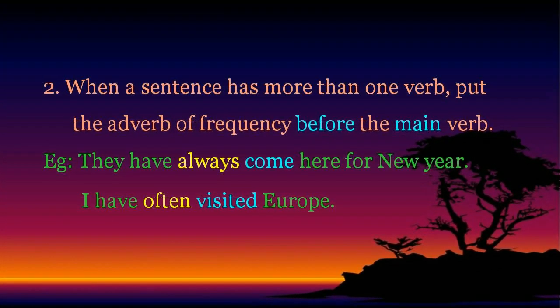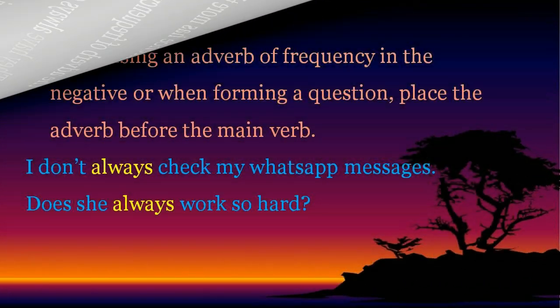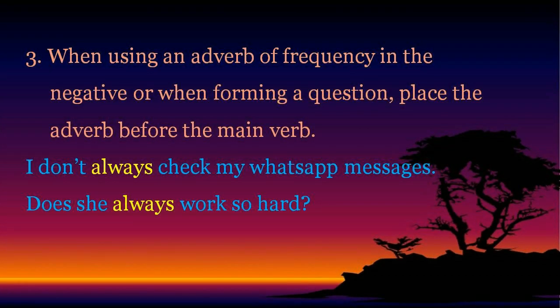Rule number two: when a sentence has more than one verb, put the adverb of frequency before the main verb. Examples: 'They have always come here for New Year.' 'I have often visited Europe.' Rule number three: when using an adverb of frequency in the negative or when forming a question, place the adverb before the main verb. Example: 'I don't always check my WhatsApp messages.' 'Does she always work so hard?'